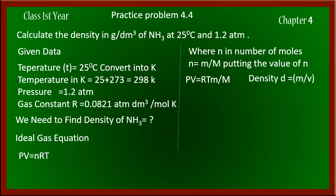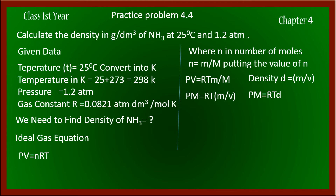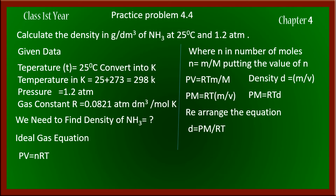Since density is mass per unit volume, we rearrange the equation. Moving M to one side and V to the other, we get mass per unit volume in brackets — which is density D. The equation then takes the shape PM = RTD, and rearranging gives us the density formula: D = PM / RT.